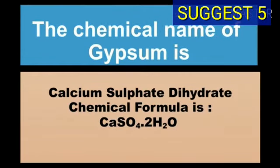The chemical name of gypsum is calcium sulfate dihydrate and chemical formula of gypsum is CaSO4·2H2O.